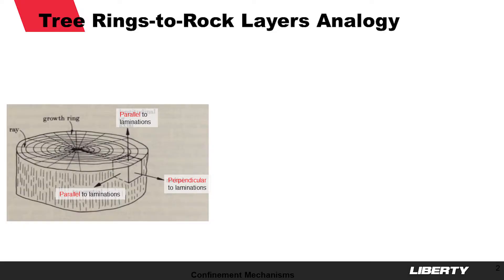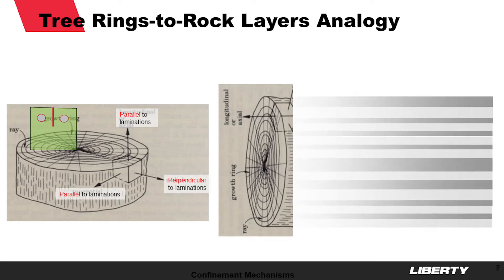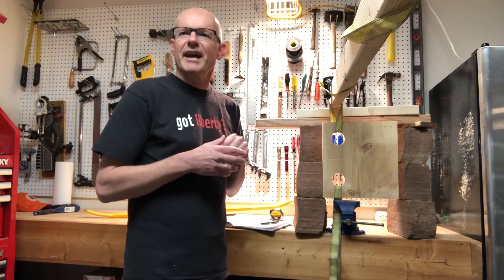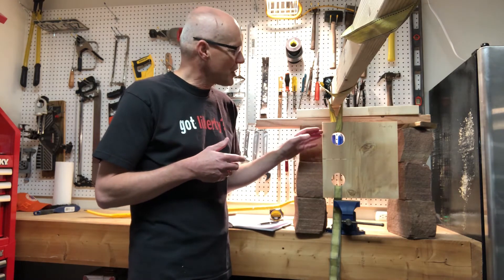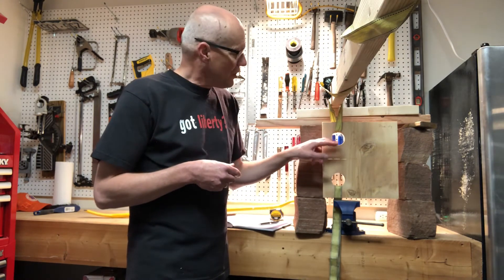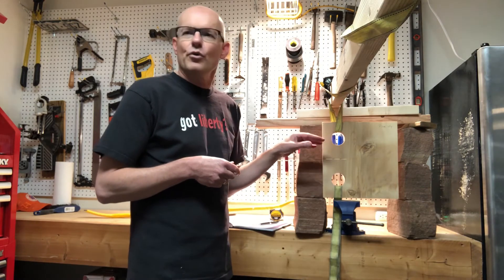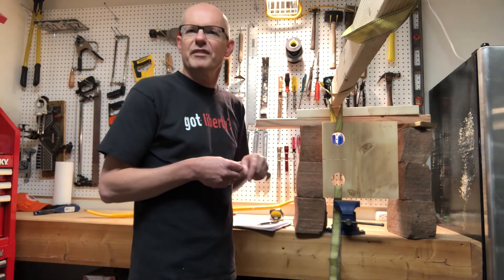Trees have layered rings of wood associated with yearly growth. Wood's resistance against pulling or tension is very different perpendicular to laminations as opposed to parallel. When we put this wood slab on its side, you could imagine a similar cross-section extended into horizontal rock layering. This pulling test is the compact tension specimen, which is a common test to measure toughness of a material. The initial pre-cut here is about four inches, and the pulling holes and pre-cut are all scaled by the size of the specimen itself.